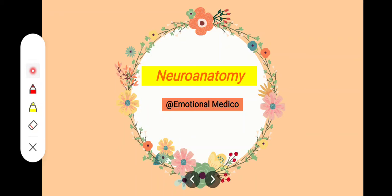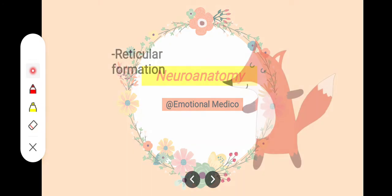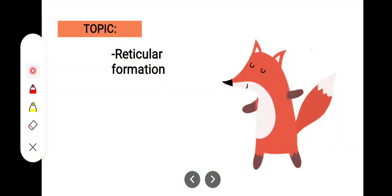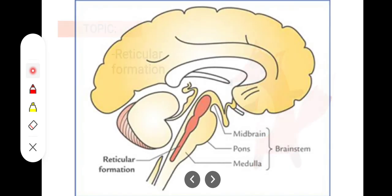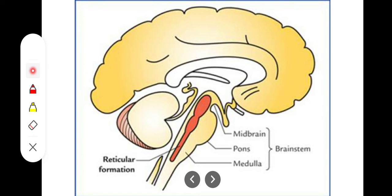In this video we will take a look at the reticular formation. As the name indicates, reticular formation is basically a network of nerve cells and nerve fibers extending all the way from the brainstem, spinal cord, medulla, pons, and midbrain up to the thalamus and hypothalamus. This whole region makes up the network of nerve cells and fibers.